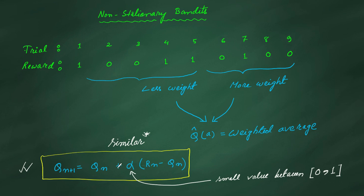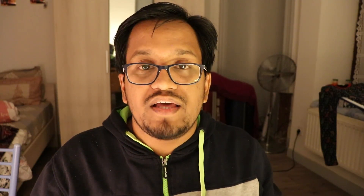In this incremental update formula for non-stationary problems, it can be shown with a small derivation that by updating in this manner we get a weighted average over the rewards where more weightage is given to the recent reward. This is called exponential recency weighted average. You can see the derivation on the screen, and we get the final formula as shown.